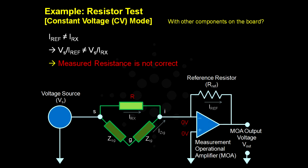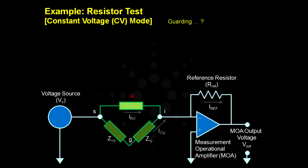The method used is called guarding. To eliminate IZIG, we need to make the potential difference between point G and point I on the diagram to be the same.